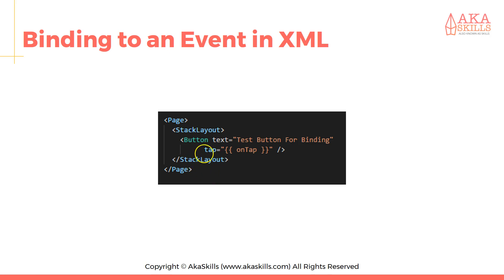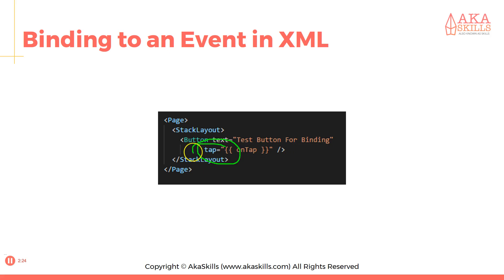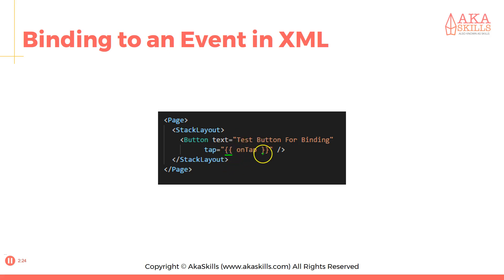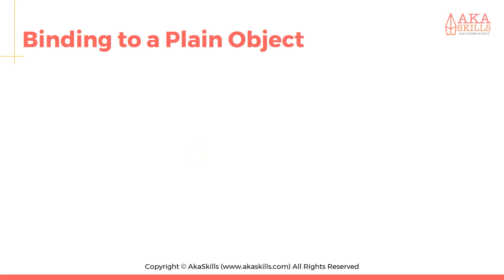We can also have binding to an event in XML. We have a page with a StackLayout and a button element whose text is 'text button for binding'. We say onTap, and when that tap event happens we want to execute the onTap function. Again, we use double curly braces to achieve calling onTap.